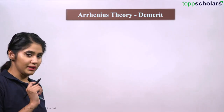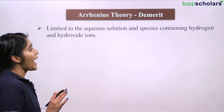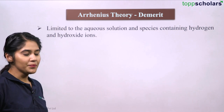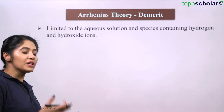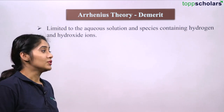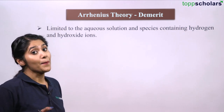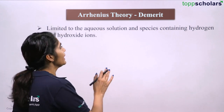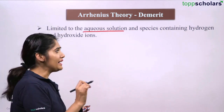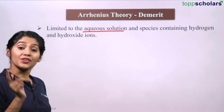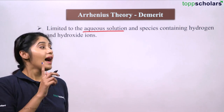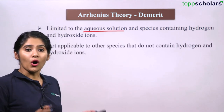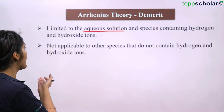Now there are some limitations to Arrhenius theory. It is limited to aqueous solutions and to species containing hydrogen and hydroxide ions only. As per Arrhenius theory, species giving out hydrogen ions are acids and those giving out OH- ions are bases — both in aqueous solution. So it only talks about aqueous solutions and only about species containing hydrogen as well as hydroxide ions. That is the biggest demerit of Arrhenius theory.